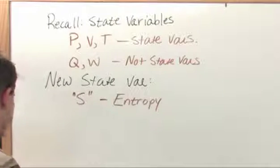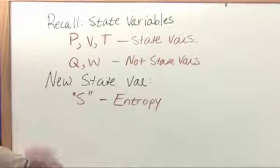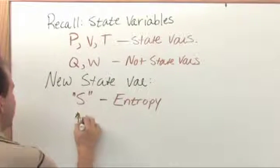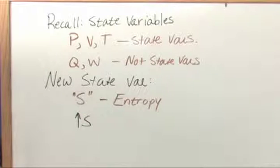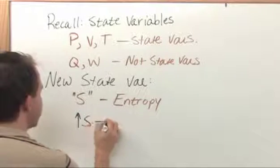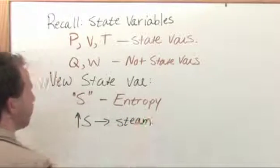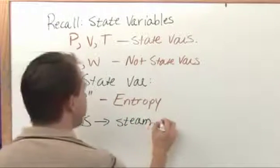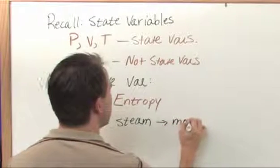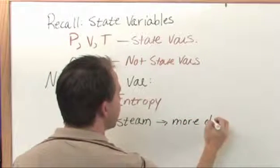Higher the entropy, the more disorganized. Let me give you an example. If you have a high value of this new state variable called S for entropy, for instance, steam might have a high entropy value because it's more disorganized or it has more disorder.